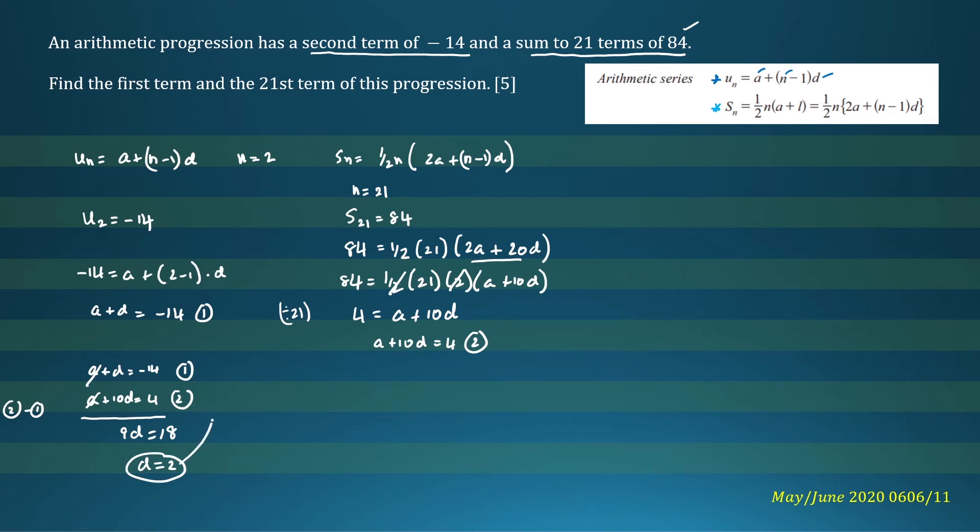Let's put d equals 2 back into equation 1. We'll have a plus 2 equals negative 14. So a will be equal to negative 16. And if you refer to the question, we want the first term. So we know that already. a equals negative 16 is the first term.